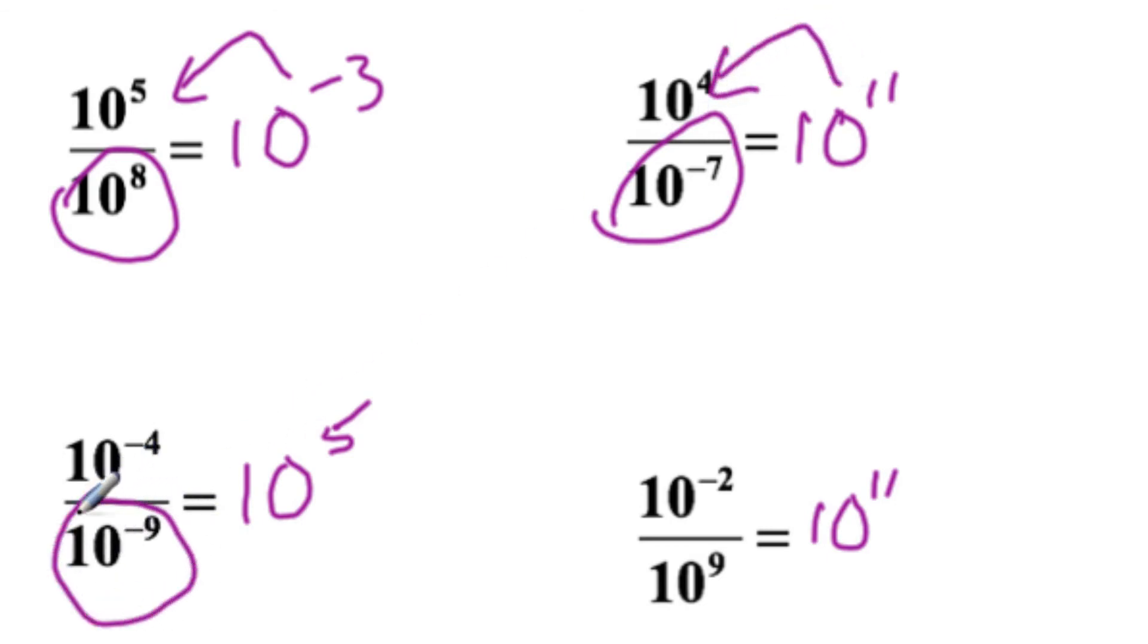Here we're dividing by something less than one, therefore our result 10 to the fifth should be greater than 10 to the minus fourth. Here we're dividing something less than one. Well, you look at that.